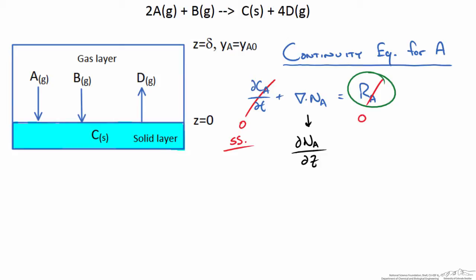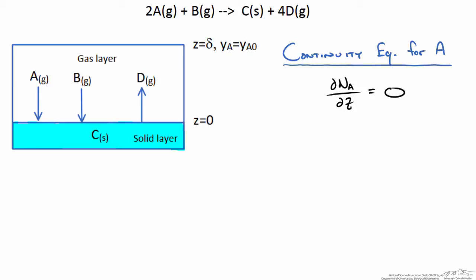When we go through these terms what we are left with is that the flux of A in the z direction is not changing. From here we will use Fick's law to describe the flux of A in terms of the diffusion of A and the bulk flow of A.